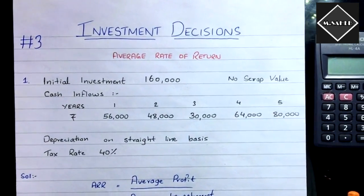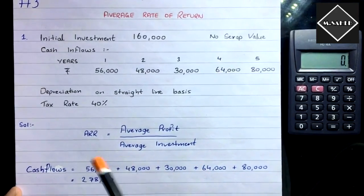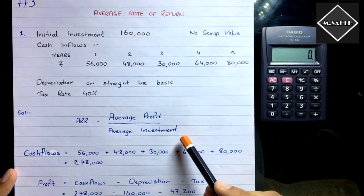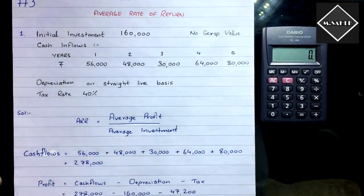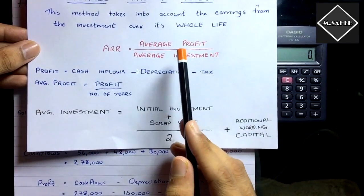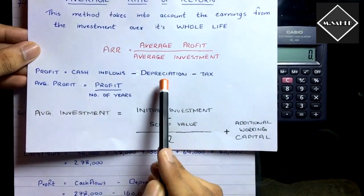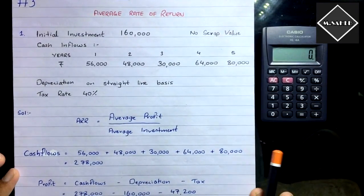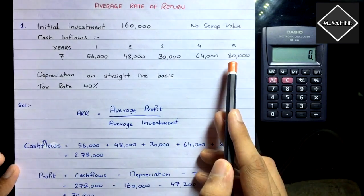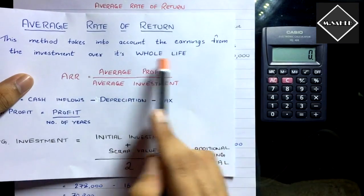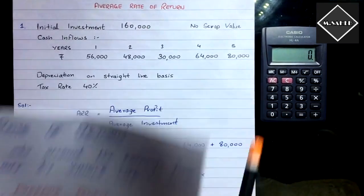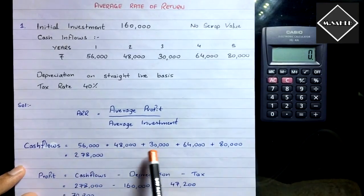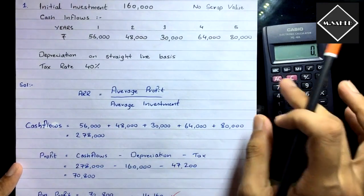First, write the formula: ARR = Average Profit / Average Investment. We need both average profit and average investment. To calculate profit: Cash Inflows − Depreciation − Tax. So let's start by adding up all the cash inflows over the whole life of the project: 56,000 + 48,000 + 30,000 + 64,000 + 80,000.